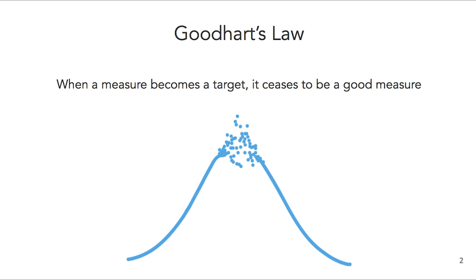Think of something like the FICO score — how we rate the creditworthiness of people, at least here in the United States. It's obviously quite desirable to have a high credit rating. So when you find out what components go into that calculation, you might like to manipulate them. For example, there's a credit card company I'll never do business with again because they screwed me over. However, I'm aware that part of my FICO score is calculated by the history of accounts I've had open, so I'm keeping that card in a drawer, making them send me statements.